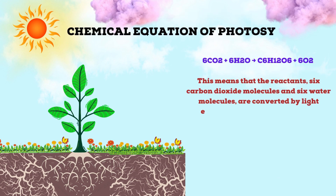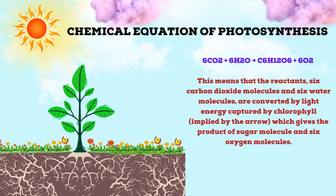The chemical equation of photosynthesis can be written as: 6CO2 + 6H2O gives a product of C6H12O6 + 6O2. That is, 6 molecules of carbon dioxide added with 6 molecules of water gives a product of 6 molecules of oxygen and sugar molecules. The reactants — 6 carbon dioxide molecules and 6 water molecules — are converted by light energy captured by chlorophyll, giving the product of sugar molecules and 6 oxygen molecules.